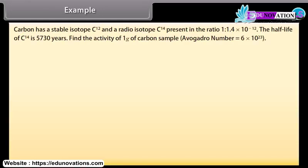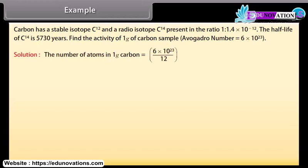Example: Carbon has a stable isotope Carbon-12 and a radioisotope Carbon-14, present in the ratio 1 : 1.4 × 10⁻¹². The half-life of Carbon-14 is 5730 years. Find the activity of 1 gram of carbon sample. Avogadro's number = 6 × 10²³. Solution: The number of atoms in 1 gram of carbon = 6 × 10²³ / 12.